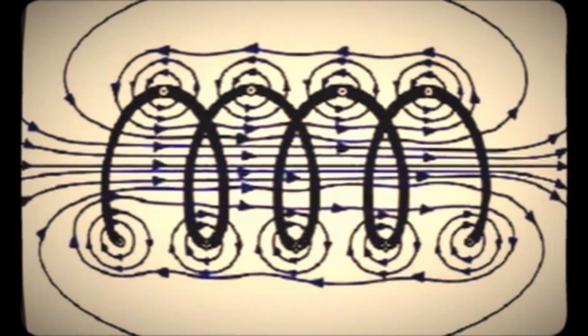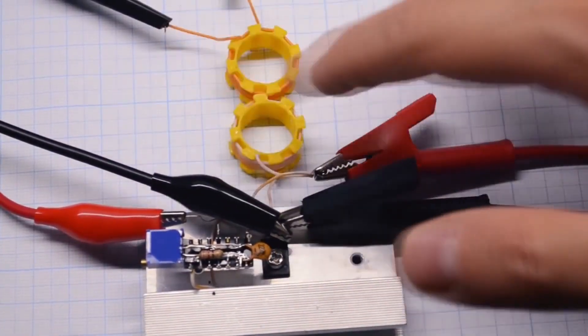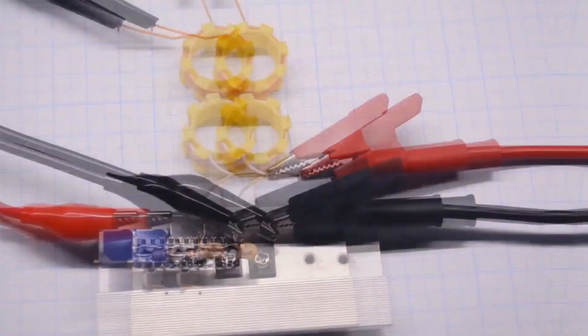The further we are from the inductor, the weaker the field becomes. And when we disconnect the current, the energy stored in this field induces an electromotive force, EMF, in the coil and is converted back into electric current. In fact, the DC-DC converters are based on these effects.